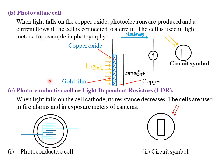The third type is the photo conductive cell, or light dependent resistor (LDR). When light falls on the cathode of an LDR, its resistance decreases. Light causes photoelectron emission, more electrons flow, and from Ohm's law (V = IR), current and resistance are inversely proportional — so more current means lower resistance. At the presence of light, more photoelectrons are emitted, more current flows, and resistance is low.